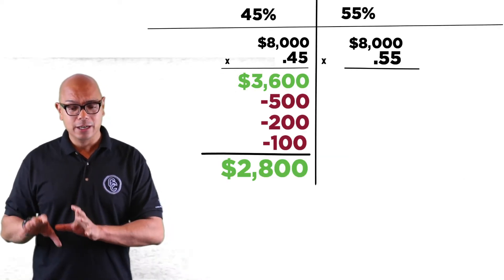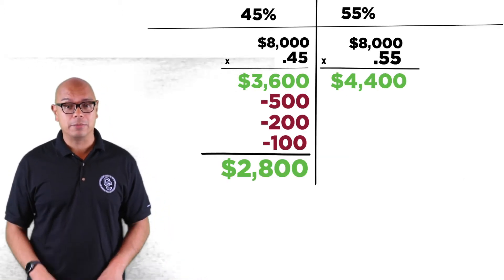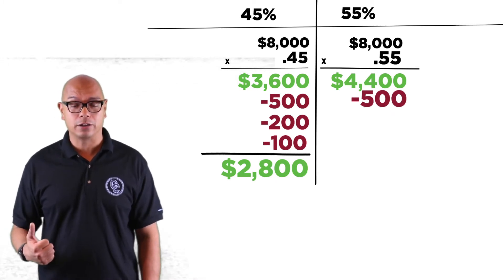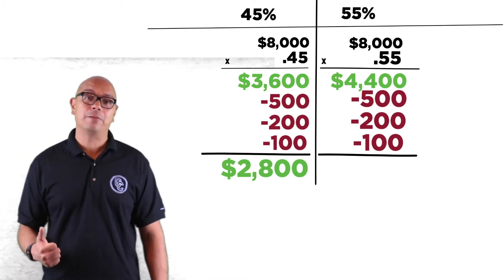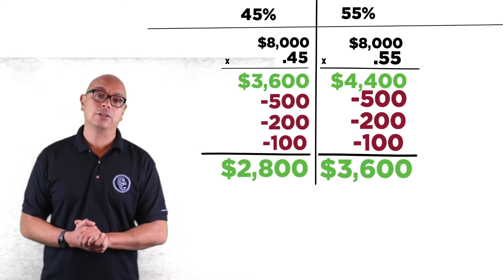The 55% mark comes out to $4,400 a month. So if you subtract the $500 car payment, the $200 student loan, and the $100 credit card payment, it comes out to $3,600 a month. So that is the amount that they can afford on that 55% debt ratio.